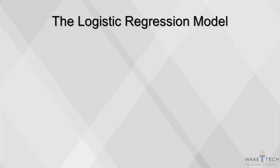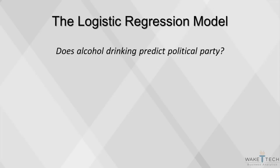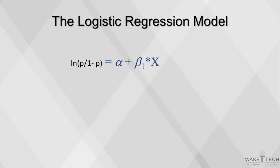Let's look at a very simple example of a logit function. Does alcohol drinking predict political party? Political party is the outcome variable, and it is binary. Therefore we need a logistic regression. A typical logit equation contains the log of the odds ratio as the outcome, which is a linear function of the predictor's x.